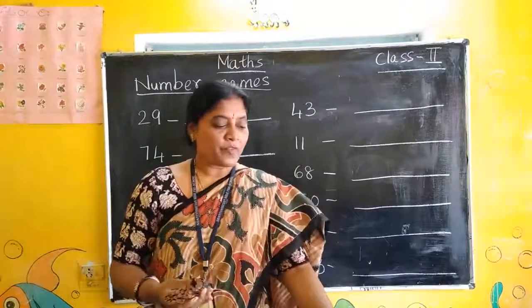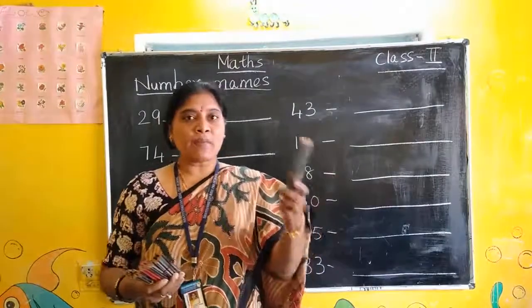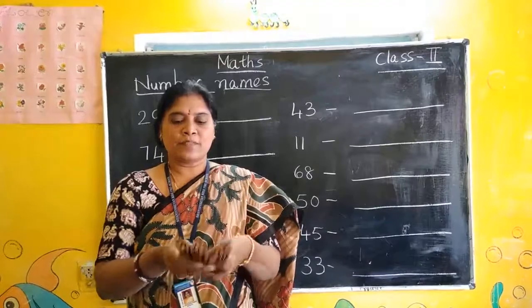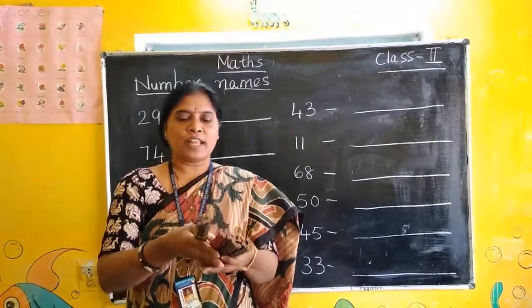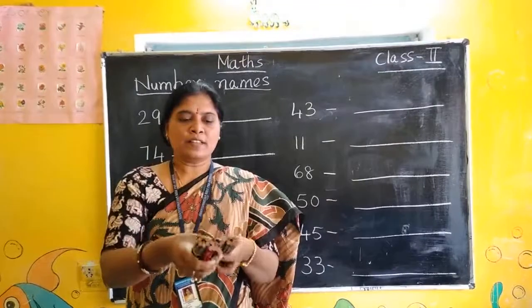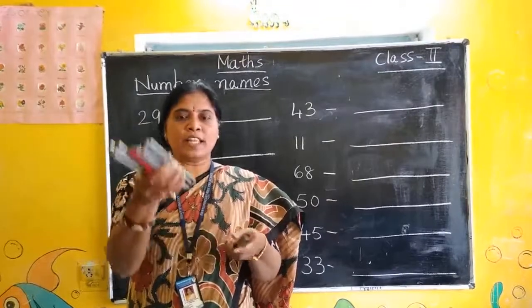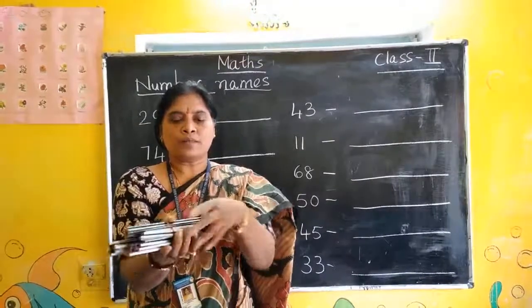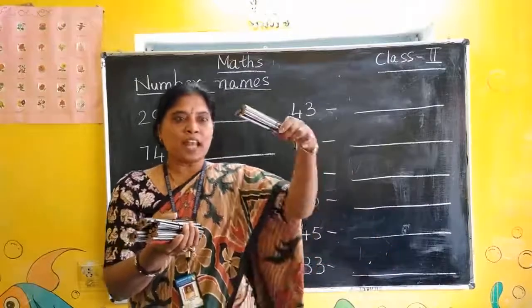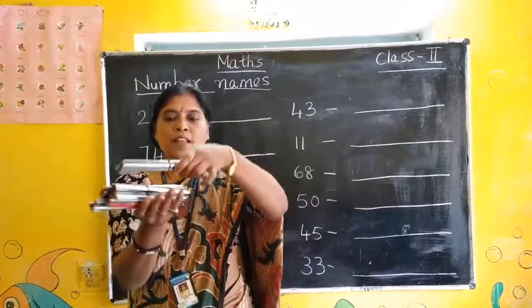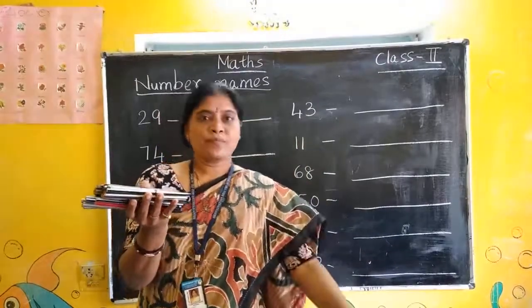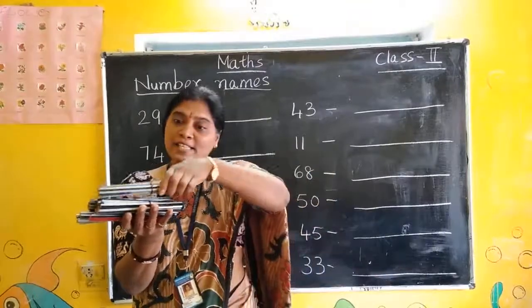Next, one more 10 I am adding — 40. Like that: 10, 20, 30, 40. One more set I am adding — 50. Then 60.